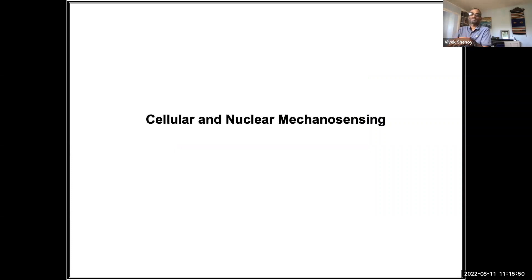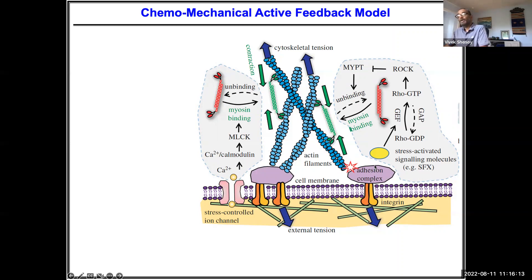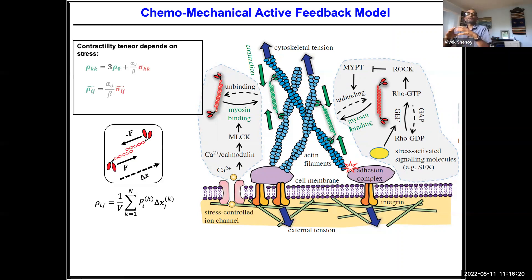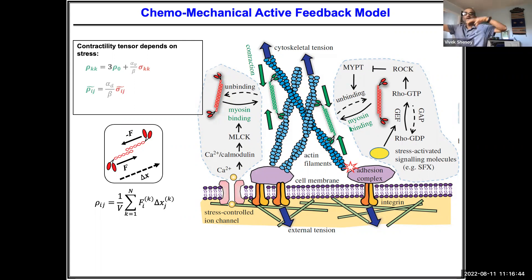The first part is cellular and nuclear mechanosensing, which is already published. In response to forces the cells sense, the level of contractility can be regulated through Rho signaling or calcium signaling depending on timescale. We think of myosin as force dipoles — you can write a density of force dipoles distributed in arbitrary orientations throughout the cell — and we want to spatiotemporally predict what this contractility is.